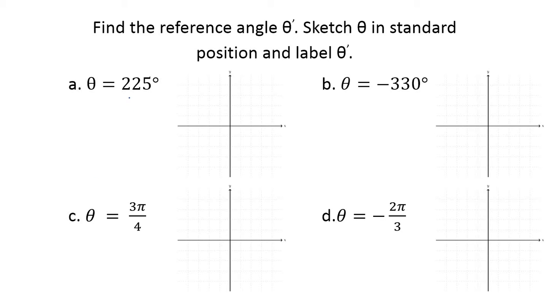So for letter A, 225 degrees. Well, I want you to picture, can you picture which quadrant that would be in? So of course, this goes to 90, then 180, so it's got to be down here, doesn't it? So let's go ahead and just sketch something in there. And I don't want you to stress about where exactly it's going to be at. Just sketch something in.